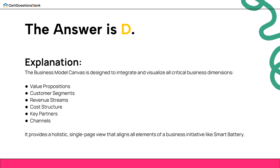The answer is D. The business model canvas is designed to integrate and visualize all critical business dimensions: value propositions, customer segments, revenue streams, cost structure, key partners, and channels. It provides a holistic, single-page view that aligns all elements of a business initiative like Smart Battery.